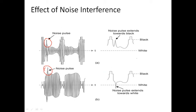Why? Because when there is noise in negative modulation, we will have a black spot — it is going towards the black. On the opposite side, in positive modulation, the noise pulse goes towards the white. So whenever there is a noise spot, we see a white spot on the television for positive modulation, or a black spot for negative modulation. The raster or background of the TV screen is gray or black, so white shows more noise than black. Therefore, negative modulation reduces the visible noise because the background is already black or gray.